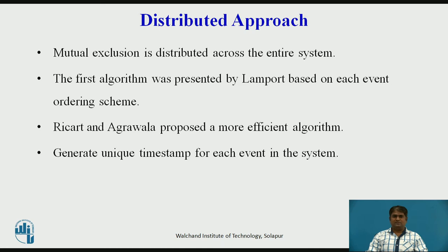In the distributed approach, the decision-making for mutual exclusion is distributed across the entire system. That is, all processes that want to enter the same critical section cooperate with each other before reaching a decision on which process will enter the critical section next. The first such algorithm was presented by Lamport based on his event ordering scheme. Later, Ricart and Agrawala proposed a more efficient algorithm that also requires a total ordering of all events in the system.